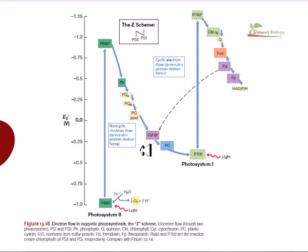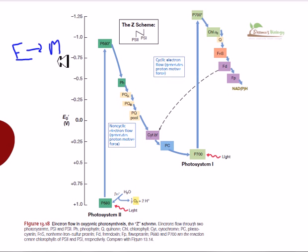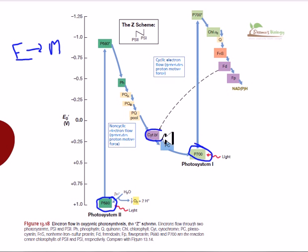For memorizing the scheme, note that after any embedded electron acceptor there will always be a mobile electron carrier — this pattern applies to both photosynthesis and respiration electron flow. The embedded systems are P680, P700, cytochrome bf, and pheophytin. The mobile carriers are quinones and plastocyanin — these are not embedded but move freely.